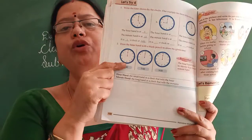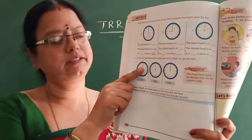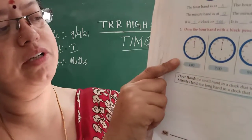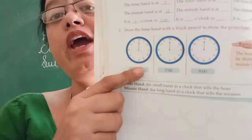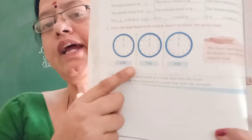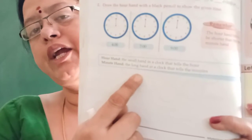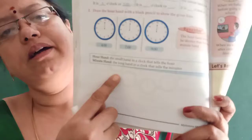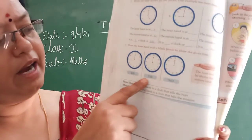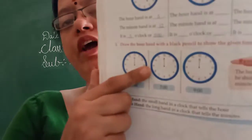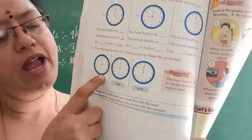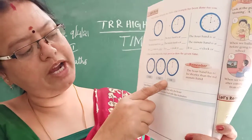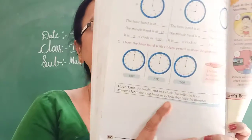Now you have to draw here. See this picture — the long hand is on 12, so where do you have to draw the short hand? See the time and you have to draw the needle. For seven, the long hand is on 12, and you have to draw the short hand. For nine also, you have to draw the needles to show the time.